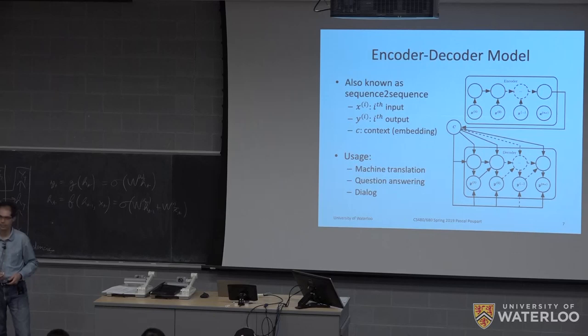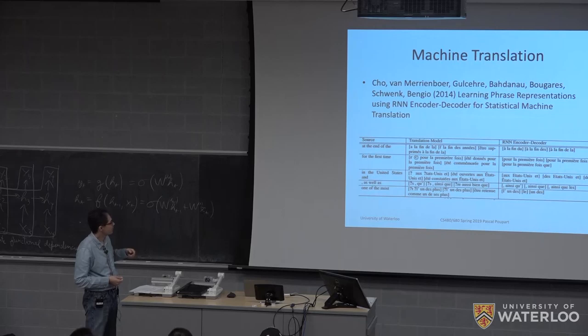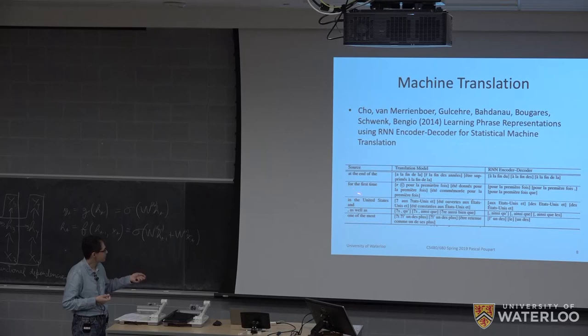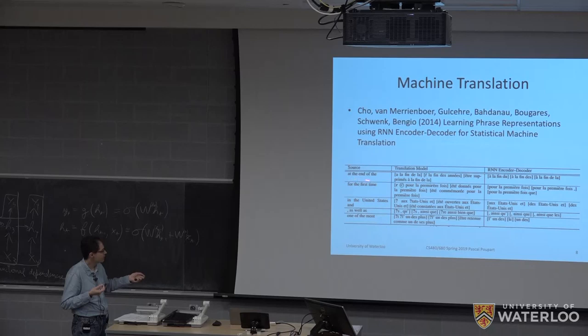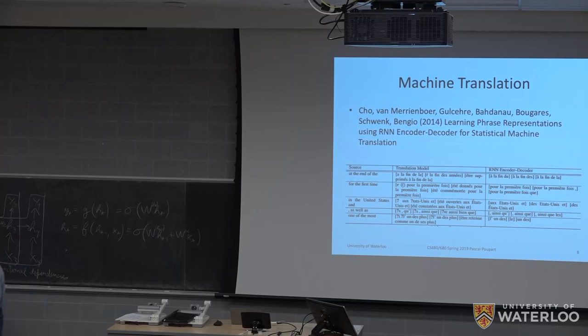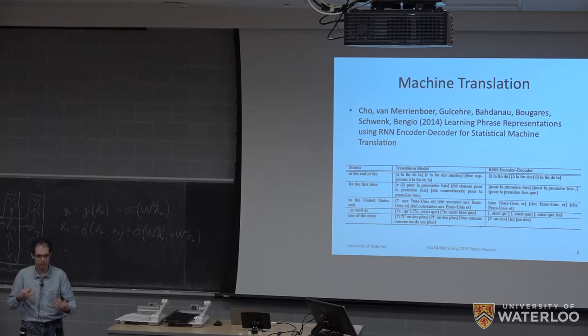This slide shows examples of translations achieved using the encoder-decoder model, with source expressions in English and translations in French that are generally quite good. The middle column shows a state-of-the-art translation model from that time, which historically used probabilistic techniques including hidden Markov models combined with other methods.